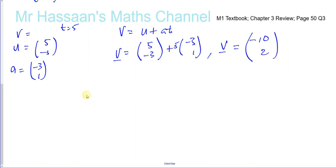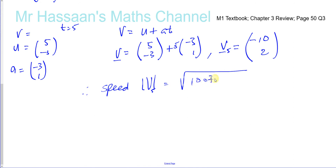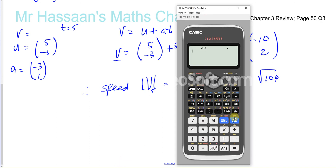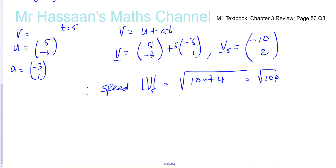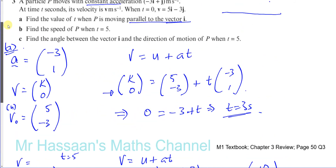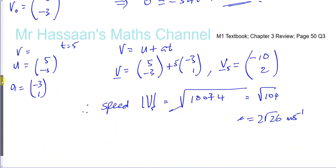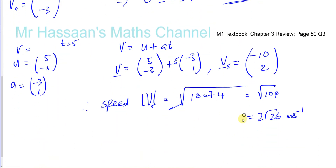The speed is the magnitude of v at t = 5 seconds. The magnitude is √((-10)² + 2²) = √(100 + 4) = √104, which simplifies to 2√26 meters per second. Remember: if you just found the vector (-10, 2), that's the velocity, not the speed. You need to find its magnitude.